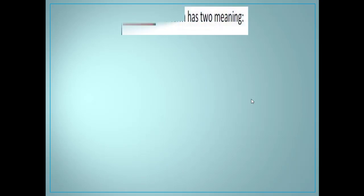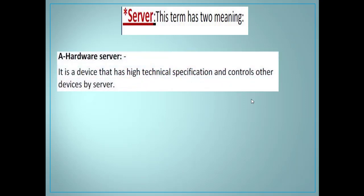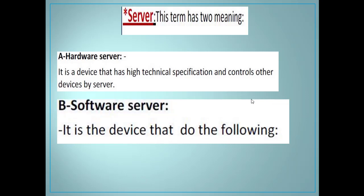There are two types of servers: a hardware server and a software server. A hardware server is a physical machine — something you can touch. It is not like a regular device; it has high technical specifications and requirements, and it controls each device inside your network. That's why we call it a server — it serves more than one device inside the network.